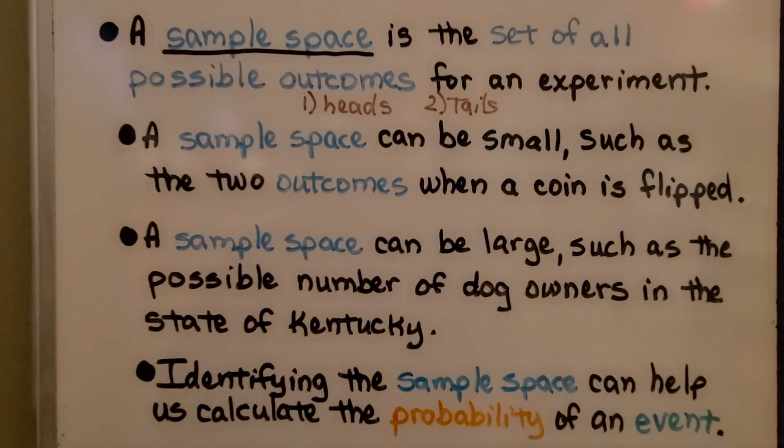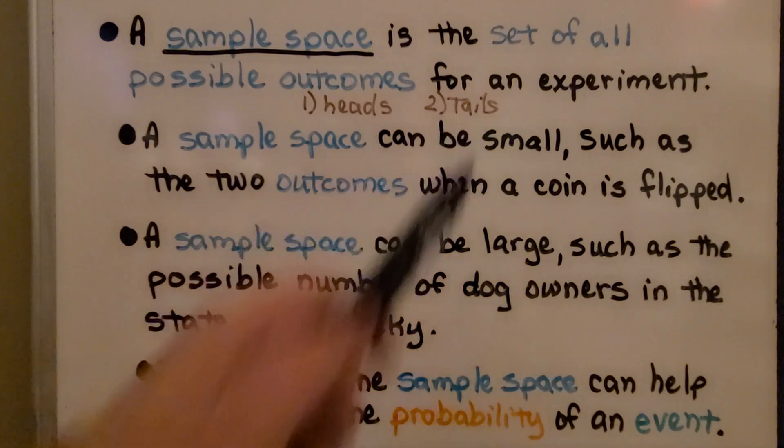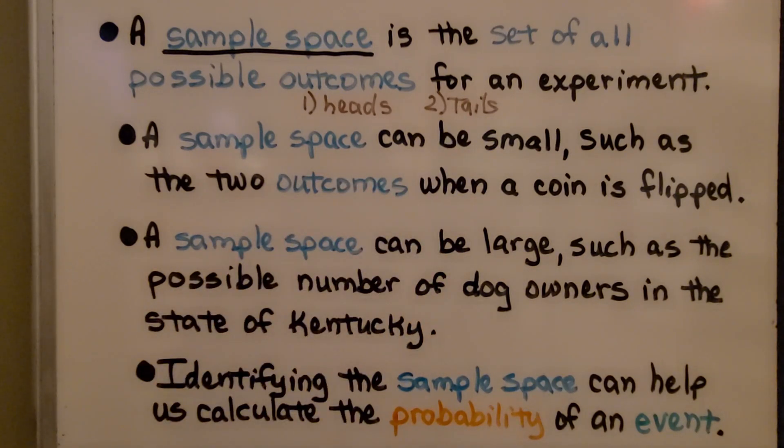So here I have a new one for you, sample space. A sample space is the set of all possible outcomes for an experiment. So for the coin, it would be heads or it would be tails. We have two possible outcomes.